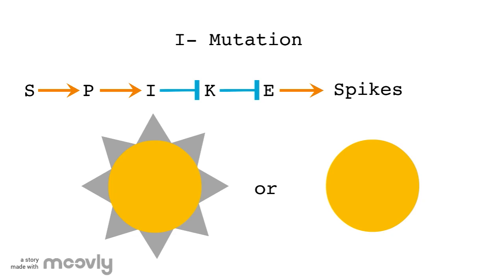The second mutation resulted in a lack of functional I genes. Once again, we'll follow the path to see the results. If the I gene stops working, the K gene will no longer be inhibited, allowing it to block expression of the E gene and therefore blocking the formation of spikes.